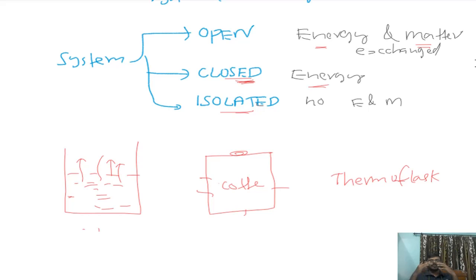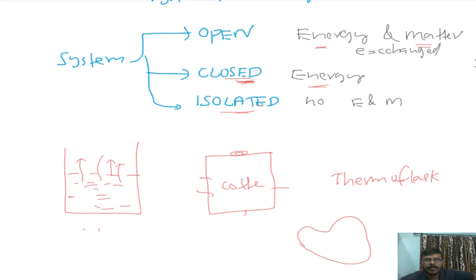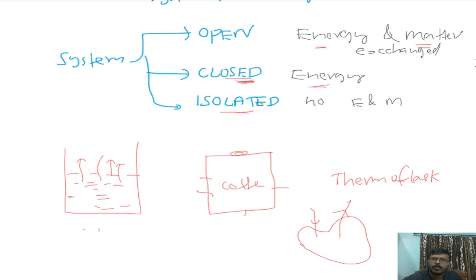If I consider a human organ — for example, my heart as a thermodynamic system — then this is an open system, because the heart takes in incoming blood and outgoing blood, so matter and energy are both being exchanged. Similarly, the human body as a whole is also an open system.